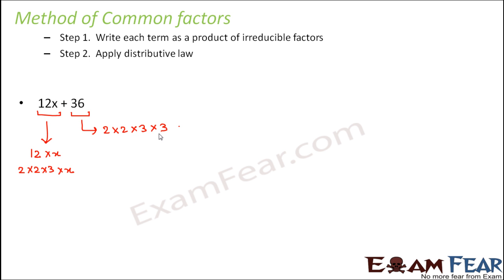Step number 2 is apply distributive law. Once you have factorized it, this can be written somewhat like this. Instead of 12x, you can write it as 2 into 2 into 3 into x, plus 36 can be written as 2 into 2 into 3 into 3. Now we will try to apply distributive law.